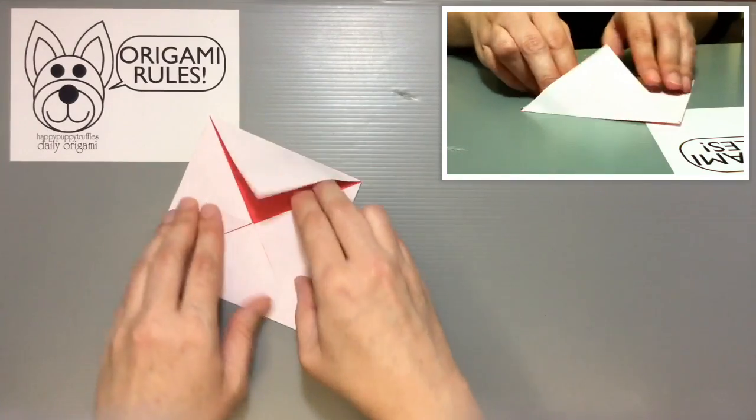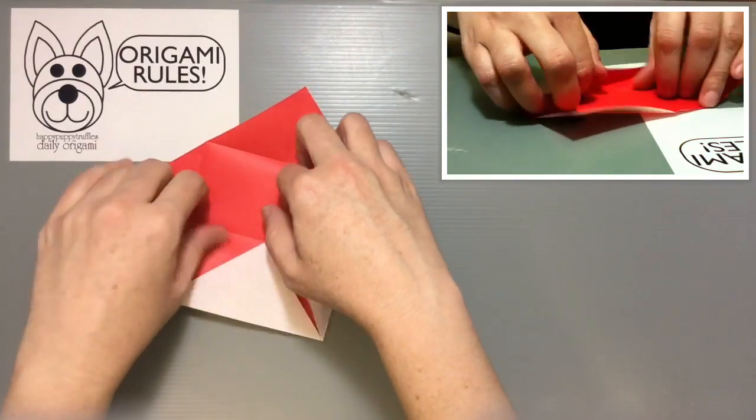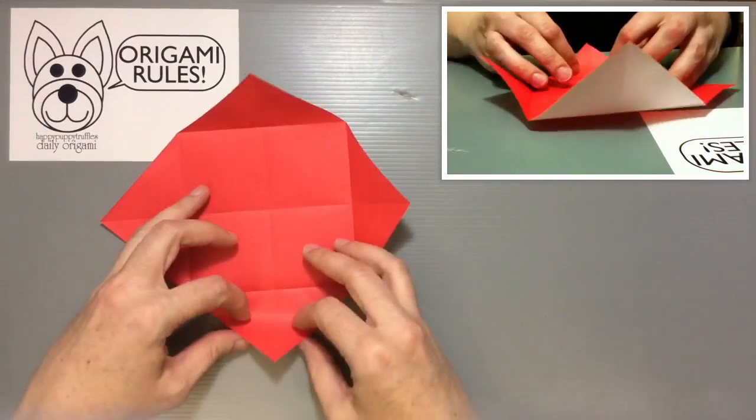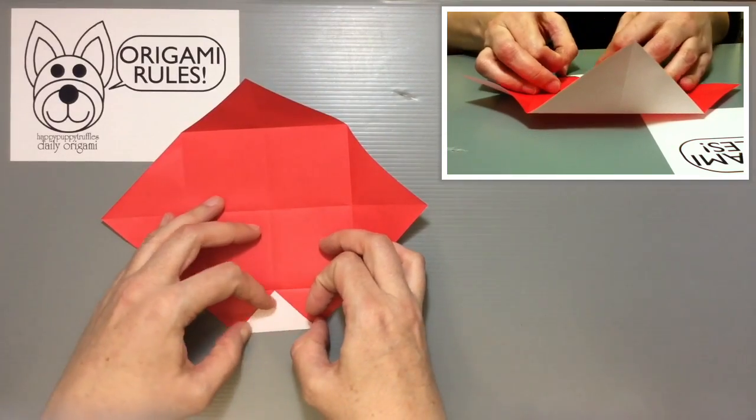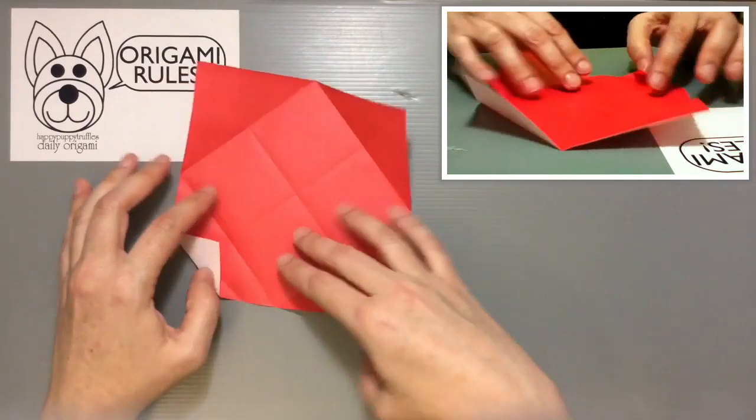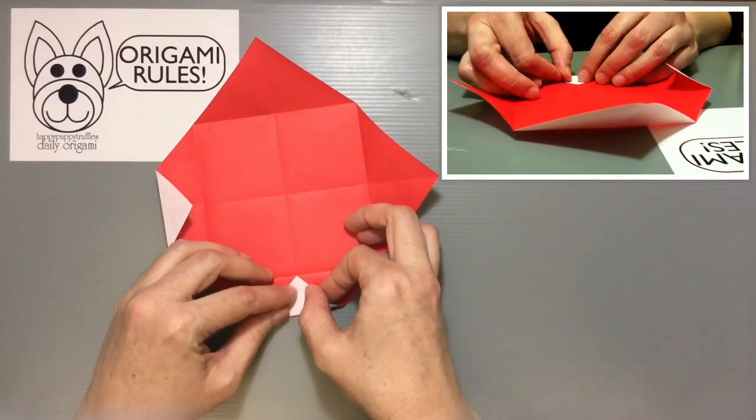Once you've done that for four sides, go ahead and open everything up. We're going to take and fold each tip to that edge that we've just folded. Go around and do that for all four of these.